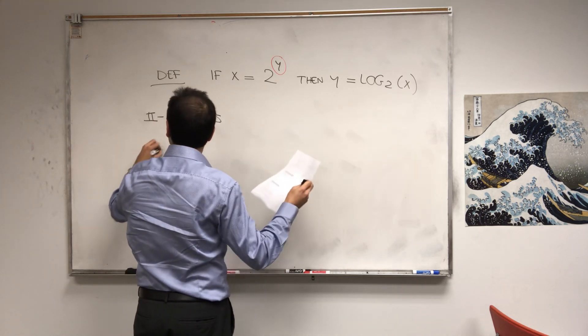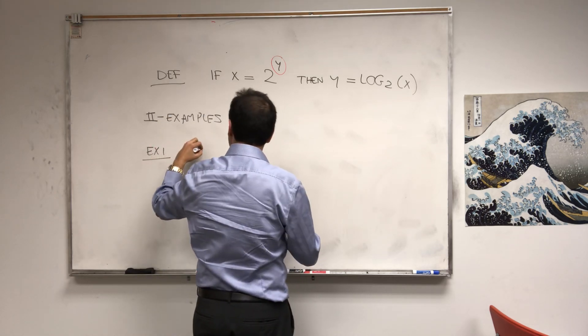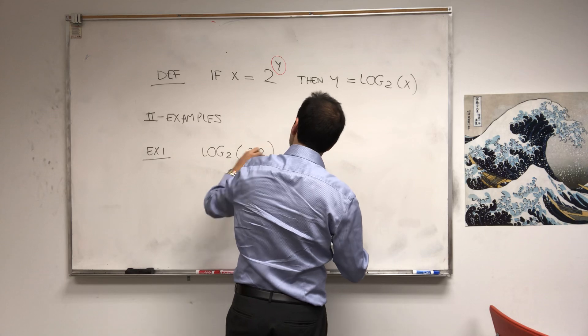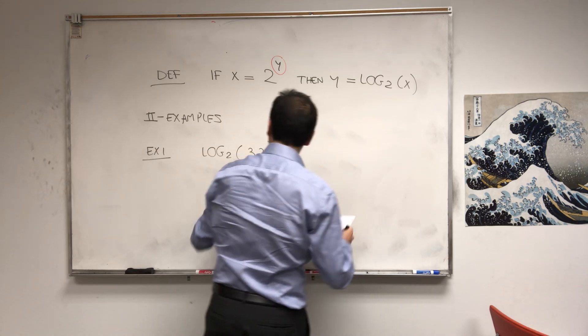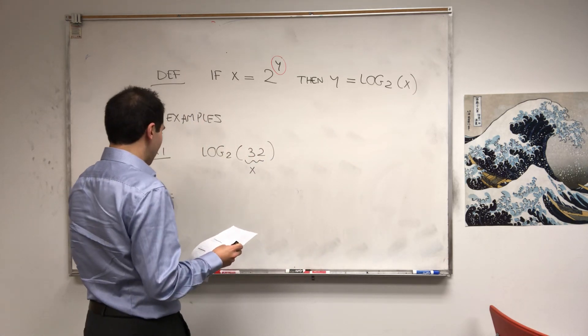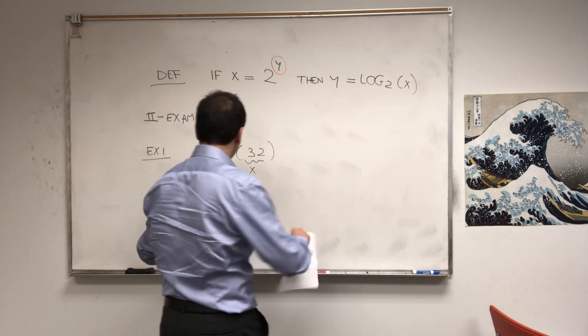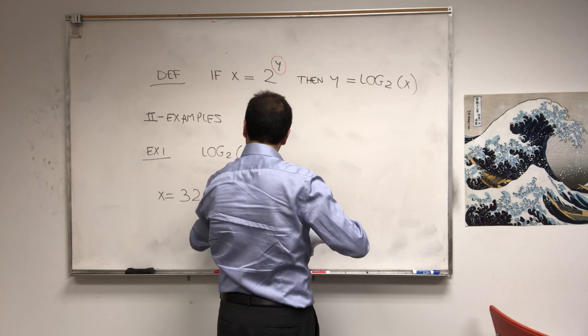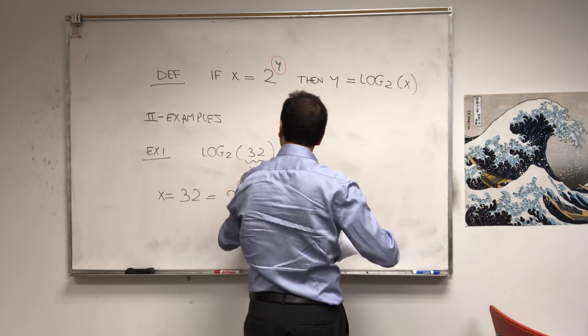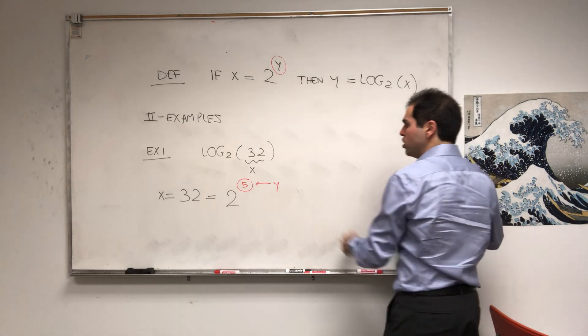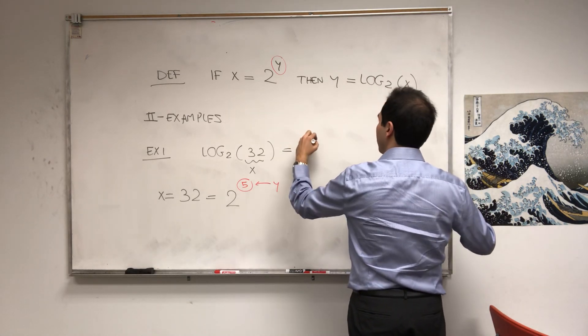For instance, the very first thing we talked about, so what is log base 2 of thirty-two? Well, thirty-two, which is x, you can write this as 2^5, which is y, therefore, the log base 2 of thirty-two, it's nothing else than y, which is five.